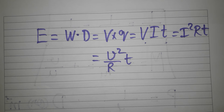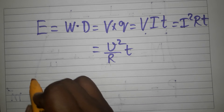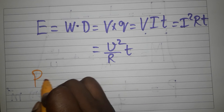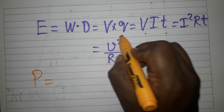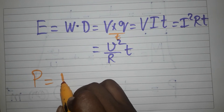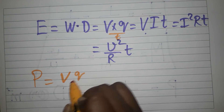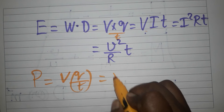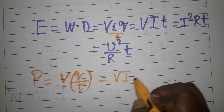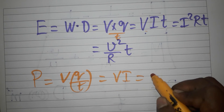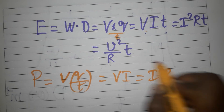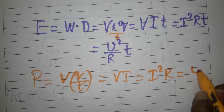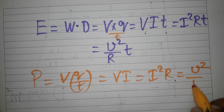If you want the power formula, just divide the energy formula by time. Dividing VQ by T gives V times I (since Q/T = current). Dividing VIT by T gives VI. Similarly, the power formulas are: P = VI, P = I²R, and P = V²/R. Units of energy are joules and units of power are watts.